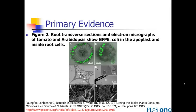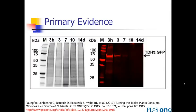This is primary evidence — showing you, here it is, here's the E. coli in the plant roots. It's seeing is believing — you're going to believe that that's actually the case. Another typical primary evidence example would be a gel, where you actually want to see those bands to prove what you're trying to prove.